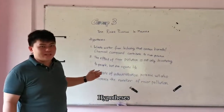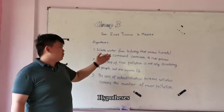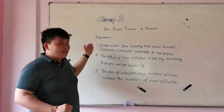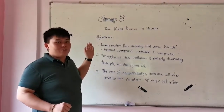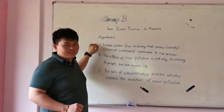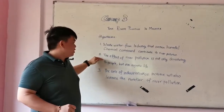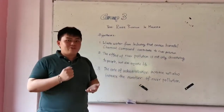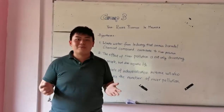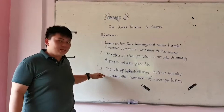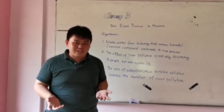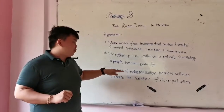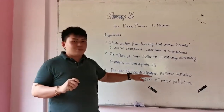We can now present our hypotheses. Hypothesis No. 1: Does wastewater from industries that contains harmful chemical compounds contribute to river pollution? We want to investigate whether this is the main factor that contributes to river pollution. Hypothesis No. 2: The effect of river pollution is not only devastating to people, but also to aquatic life. We want to show that river pollution is not only harmful to humans but also to life under the water. Hypothesis No. 3: We want to see the relationship between the rate of industrialization and the rate of river pollution — specifically, whether as the rate of industrialization increases, the number of river pollution cases will also increase.